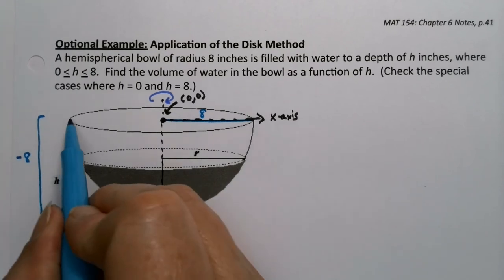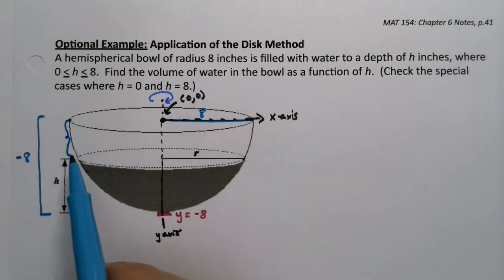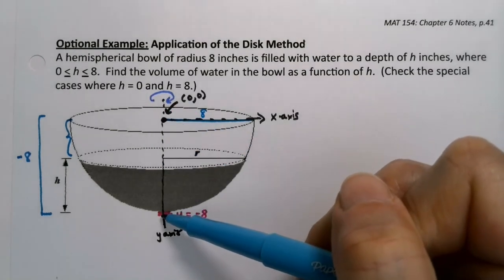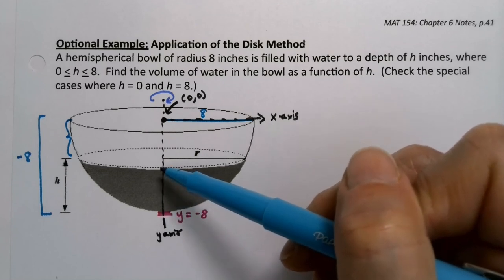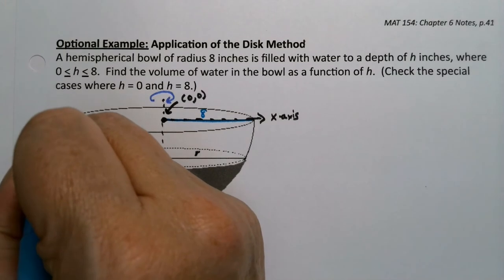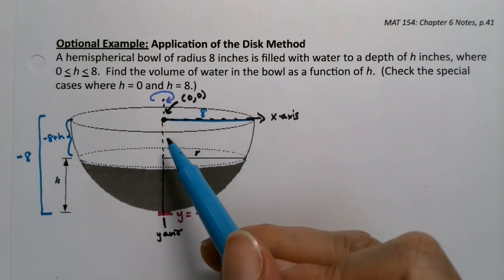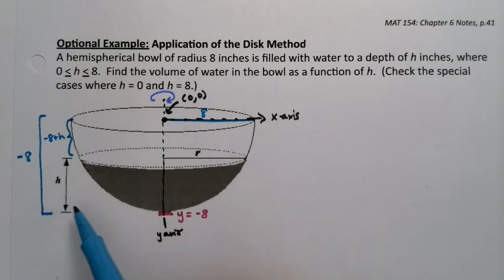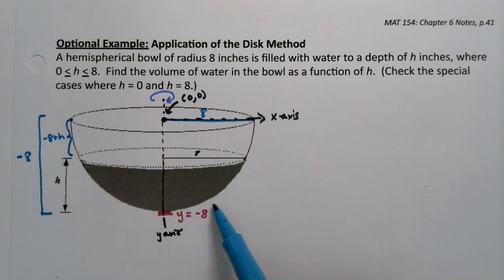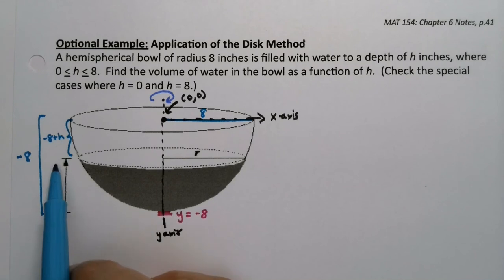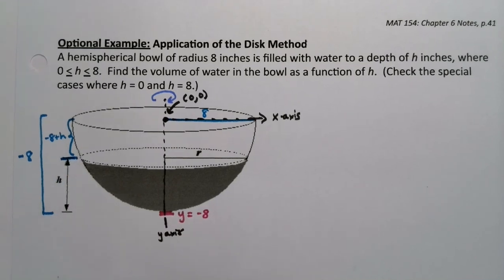What's key is knowing the y-value at the water's surface. At the very bottom of the bowl, y equals negative 8, since the origin is at the center. So the top of the water is at y equals negative 8 plus h. We can't use h directly because h is measured from the bottom of the bowl, not from the origin. It has to be negative 8 plus h.